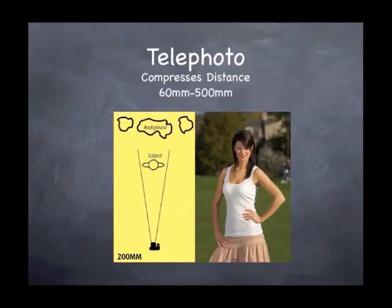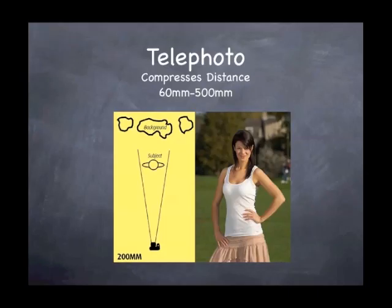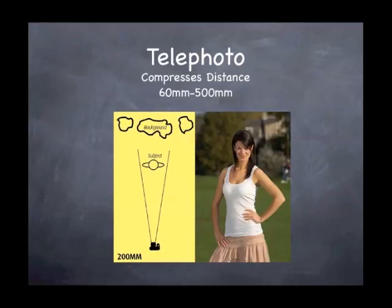Telephoto lenses compress distances. You can get telephoto lenses up to a thousand millimeters, but normally you want to stay from 60 to 500. They create shallow depth of field, putting the actor in focus and blurring out the background. That's good when you just want the audience to look at one thing — it really packs a punch. You can isolate somebody by throwing the background out of focus, almost putting them in jail of their own fears.